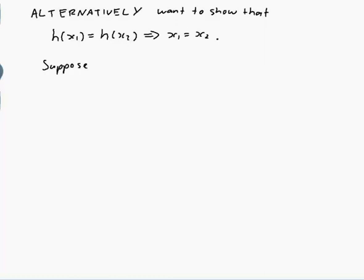Alternatively, what we want to do is show that it's 1 to 1 using the definition. The definition of 1 to 1 would be that h of x1 is equal to h of x2 implies that x1 equals x2. What that means is if you assume that h of x1 is equal to h of x2, you should be able to do some working and get x1 equals x2. So suppose h of x1 equals h of x2.